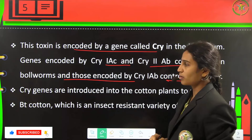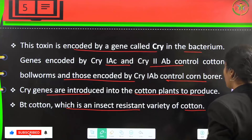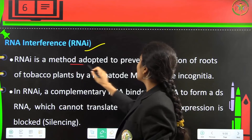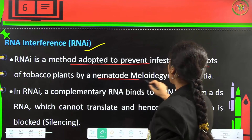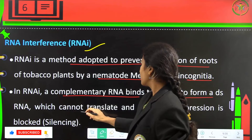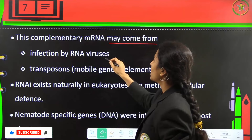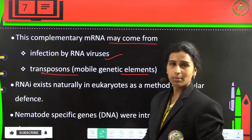Cry genes are introduced into cotton plants to produce Bt cotton, which is an insect-resistant variety. RNA interference (RNAi) is a method adopted to prevent infestation of the roots of tobacco plants by a nematode. In RNAi, a complementary RNA binds to the mRNA to form a double-stranded RNA which cannot be translated, hence silencing the gene. The complementary mRNA may come from an RNA virus infection or from transposons, which are mobile genetic elements. RNAi exists naturally in eukaryotes as a method of cellular defense.